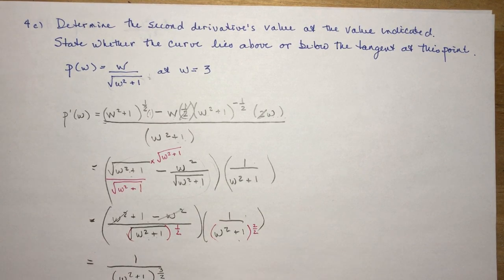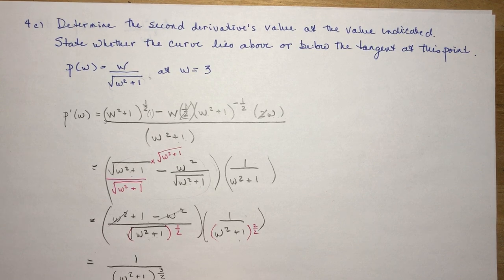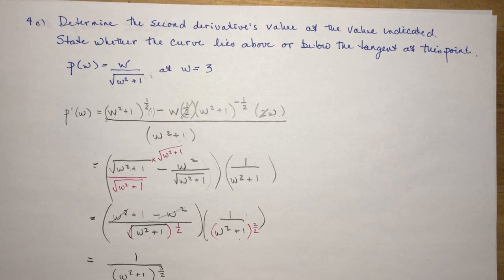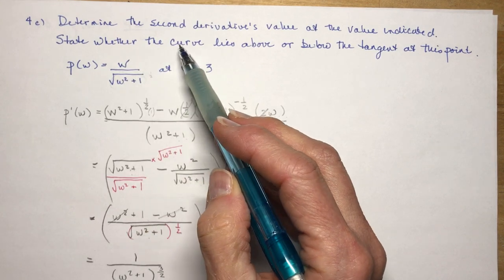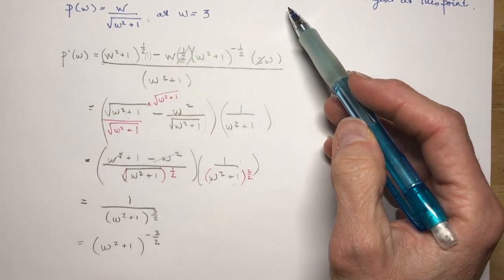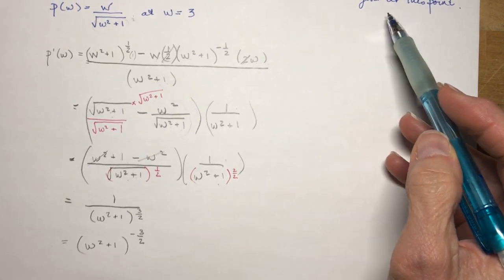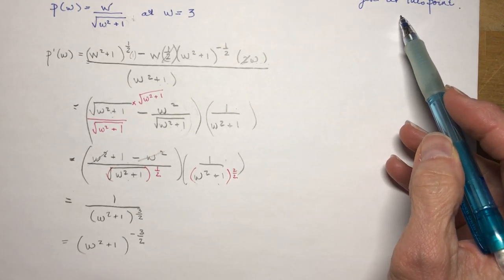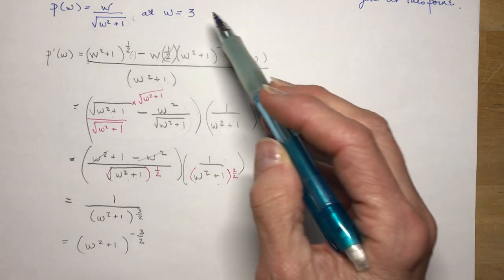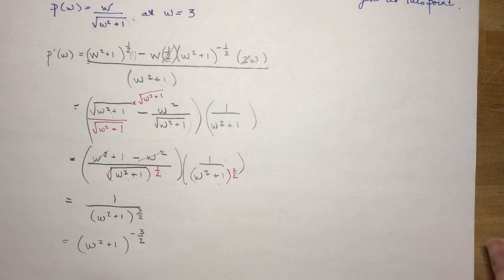That's not so bad. When you're finished, bring it to the numerator and make it a negative exponent. They're not asking me to find any critical values here — just whether the curve lies above or below the tangent. So I need to know whether the function is concave up or concave down when w = 3, which means I need the second derivative.